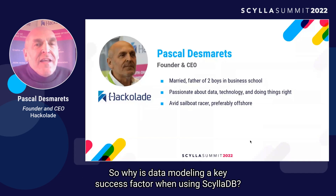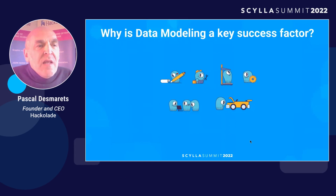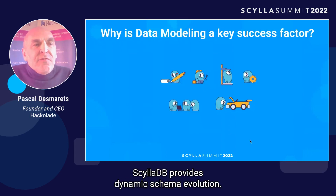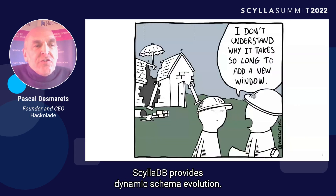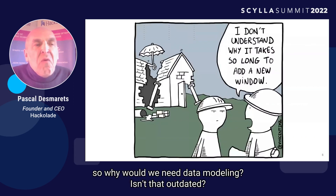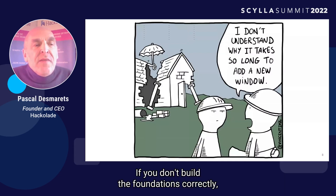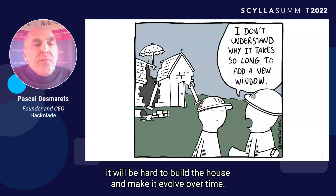So, why is data modeling a key success factor when using ScyllaDB? ScyllaDB provides dynamic schema evolution, plus we're in an era of agile development. So, why would we need data modeling? Isn't that outdated? Well, the answer is simple: technical debt. If you don't build the foundations correctly, it will be hard to build the house and make it evolve over time.